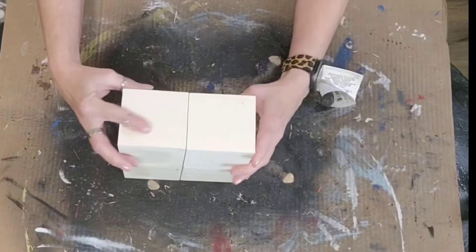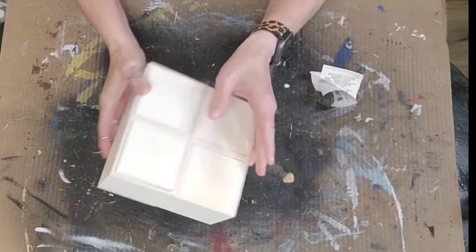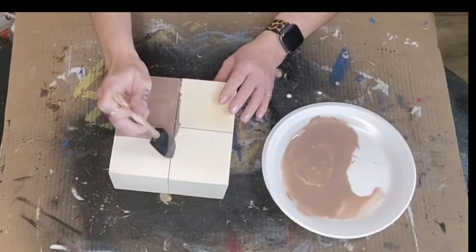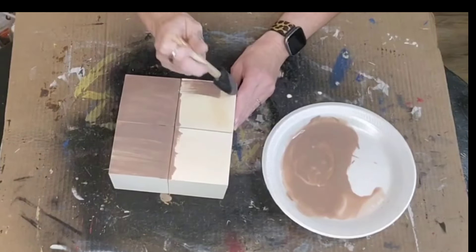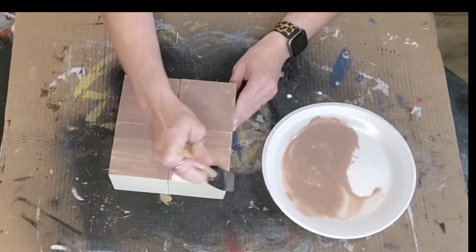When I had the four boxes glued together and I had a nice square, I took some Apple Barrel paint in nutmeg and I added some water to that and a sponge brush. I just sponged that over the entire project.